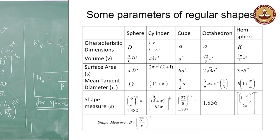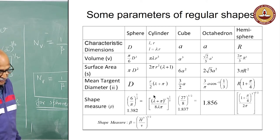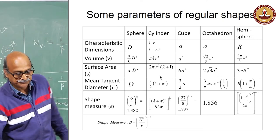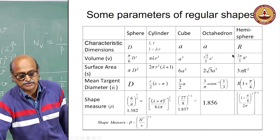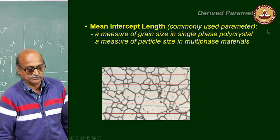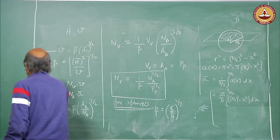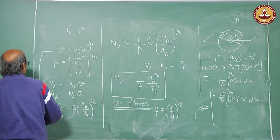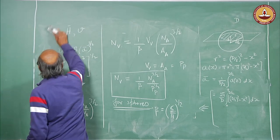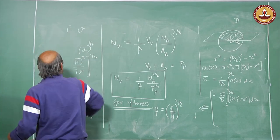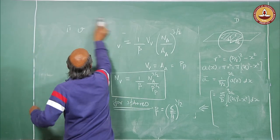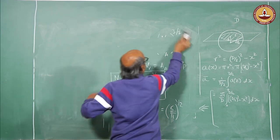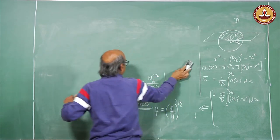That was numerical density as one of the derived parameters. Let us now look at some other derived parameters, starting with grain size for single-phase polycrystalline materials.